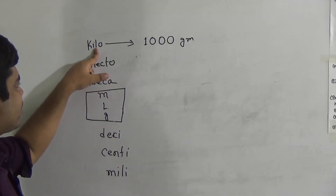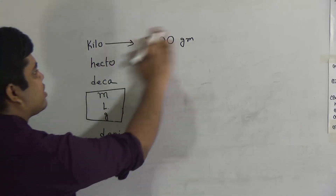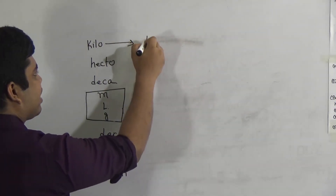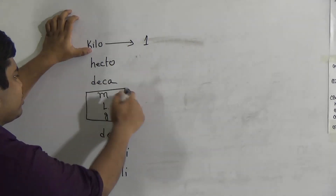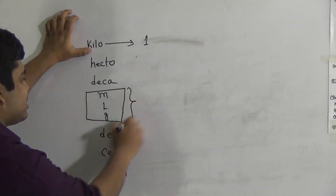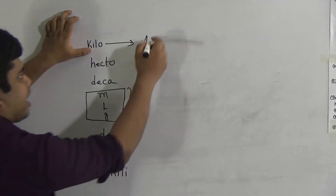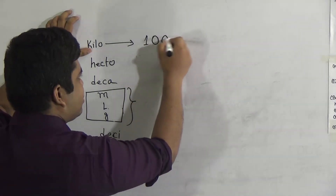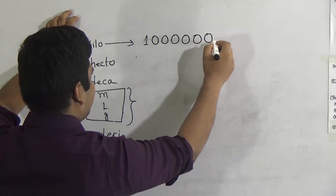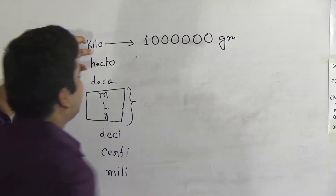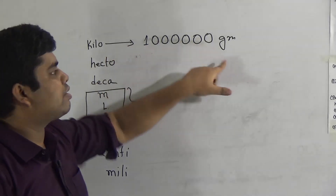If I ask: 1 kilogram equals how many milligram? From Kilo to Milli, I count the steps: 1, 2, 3, 4, 5, 6 — that is 6 steps. So I write 6 zeros. Therefore, 1 kilogram equals 1,000,000 gram. Also, 1 hectogram equals how many grams? From Hecto to Gram is 2 steps, so 1 hectogram equals 100 gram.